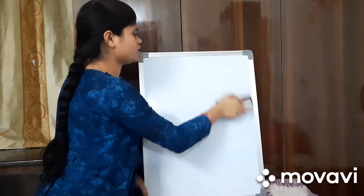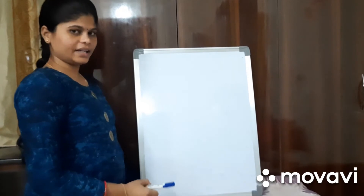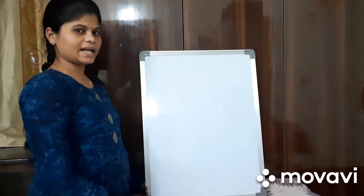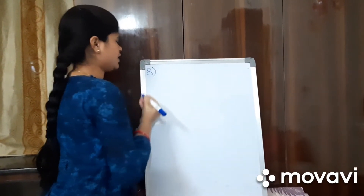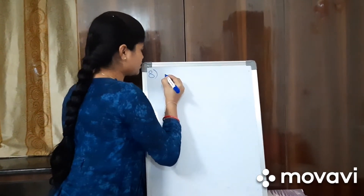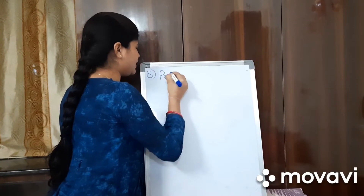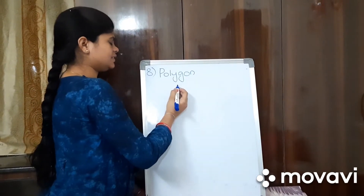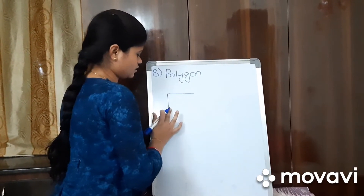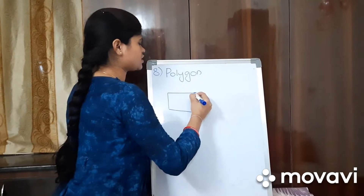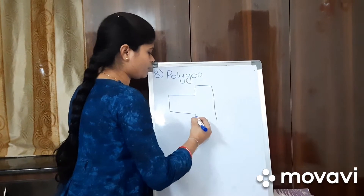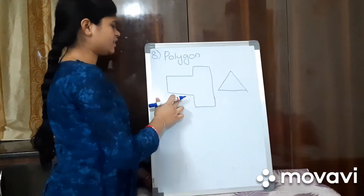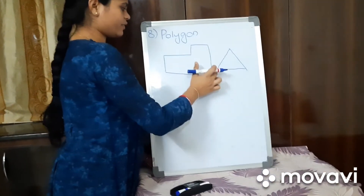Let us review what topics we have learnt till now: point, line, line segment, arrow, intersecting lines, and parallel lines. Next, we are going to learn about polygon. A polygon is a diagram which may have any number of lines. This is a polygon. This is also a polygon with three sides, and this is a polygon with six lines.